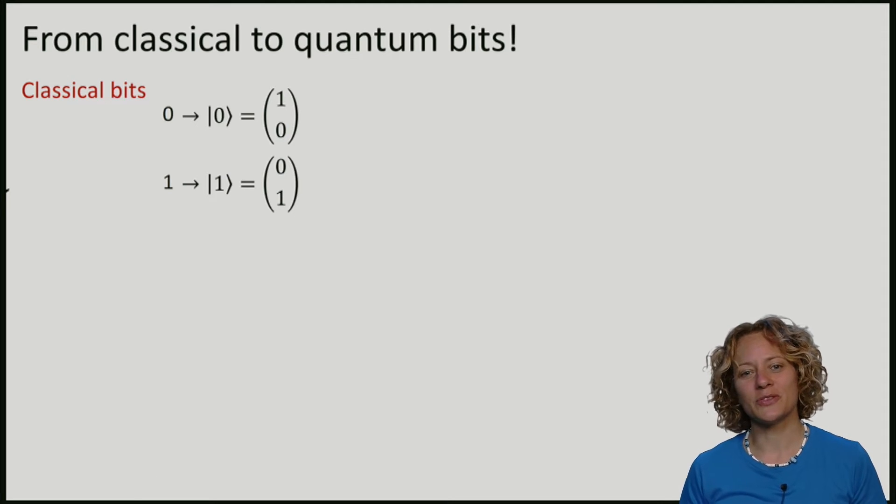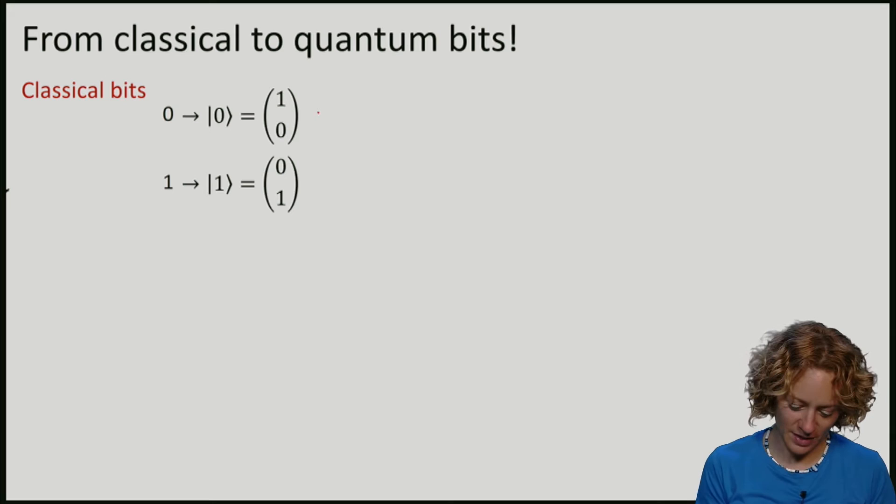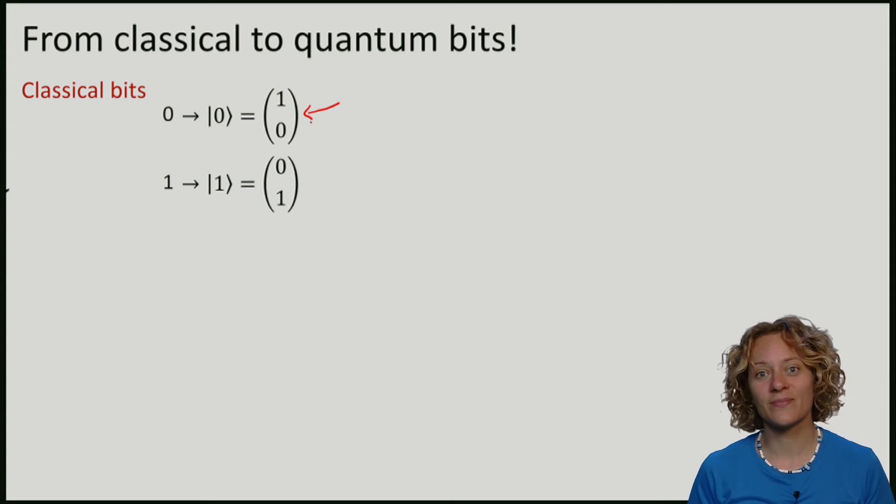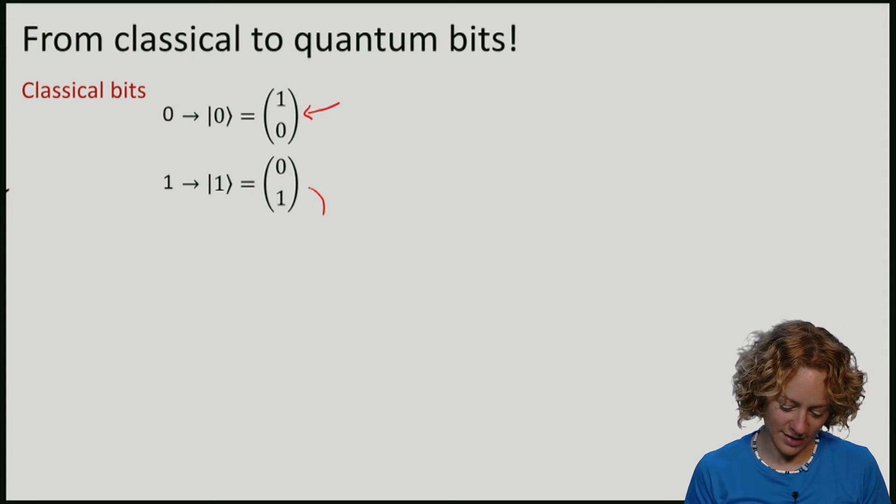We will associate both of these bits with a vector. For zero, I will pick this vector, and for one, I'll take this one.